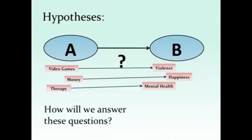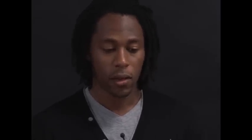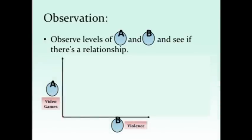So how do we answer these questions? How do we search for these relationships between variables? The most natural answer is that you could observe. Most people will tell you, why not simply measure levels of A and levels of B and see whether or not people who are high in A are also high in B? Do people who play lots of violent video games also do lots of violent things? Do people with lots of money also appear to be very happy? That's an okay answer. If you look at observation, the idea is that we observe the levels of A and B, the two variables, and we see if there is a relationship.